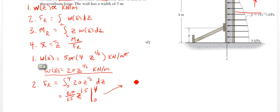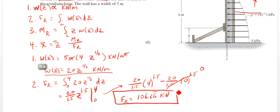So we'll have 20 over 1.5 times 4 to the 1.5 minus 20 over 1.5 times 0 to the 1.5. Anything 0 raised to any power is going to be 0, so this whole thing becomes 0. And that part there will become FR equals 106.66 kilonewtons. All right, so we got step 1 done. We got step 2 done.